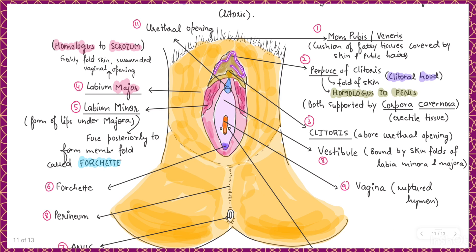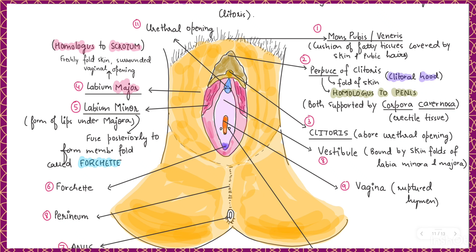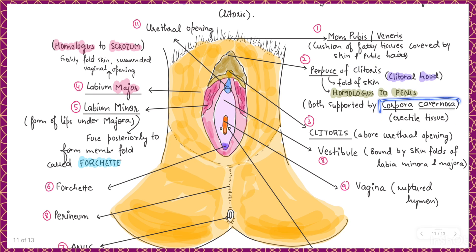The next structure is a fold of skin called the prepuce of the clitoris, also referred to as the clitoral hood, which is present over the clitoris. The prepuce of the clitoris is considered homologous to the penis, because both the penis and clitoris are supported by erectile tissue called the corpora cavernosa.